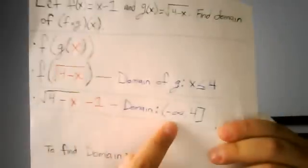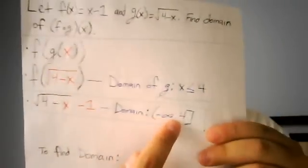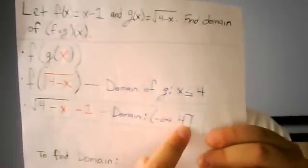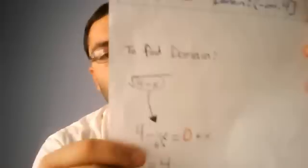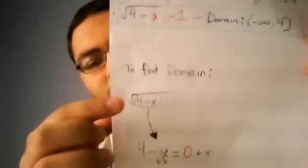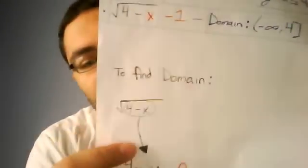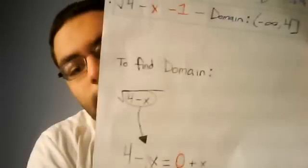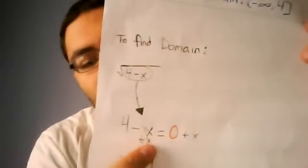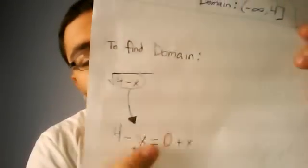Now the domain of this would be negative infinity comma 4, and the reason for that is when you take this and you set this equal to zero, then you just solve for x. I added x to both sides because x was negative.